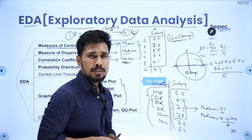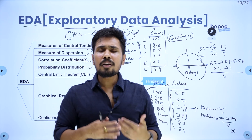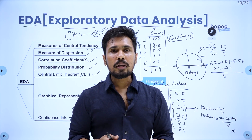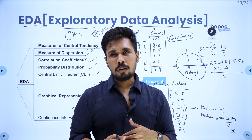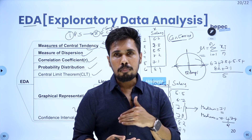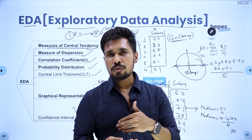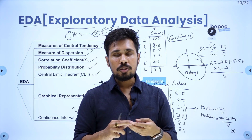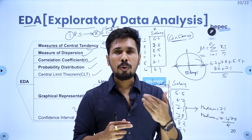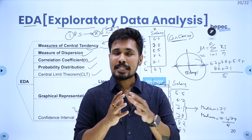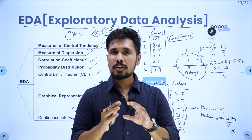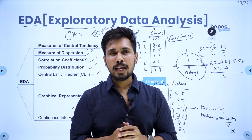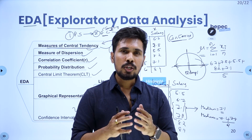Mode is used for discrete data, whereas median and mean are used for continuous data. Now the question is: why use mean, why use median, and when do you choose one over the other? Let's try to understand this practically with a quick Excel example — see you in the next session.